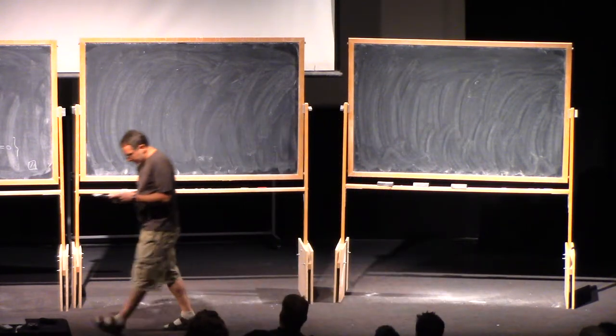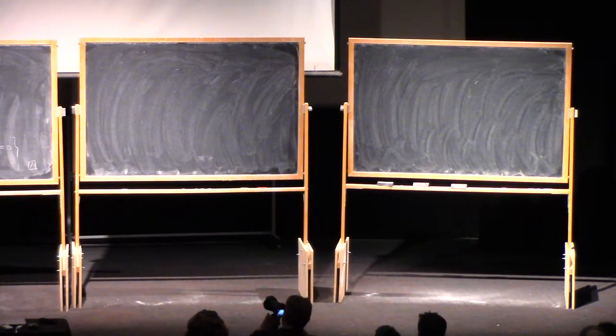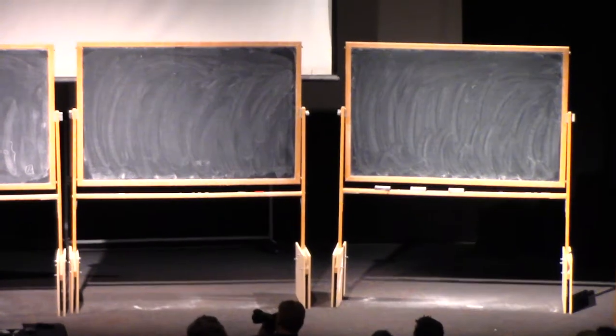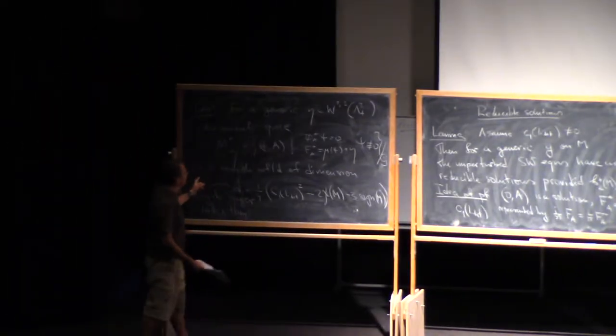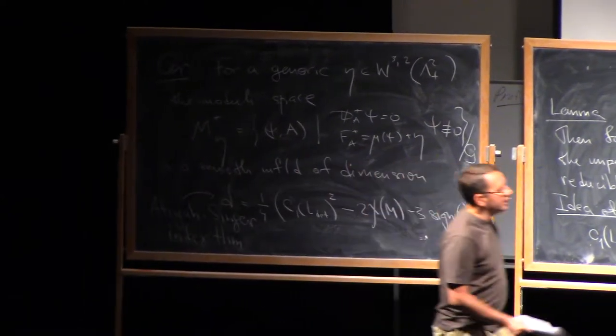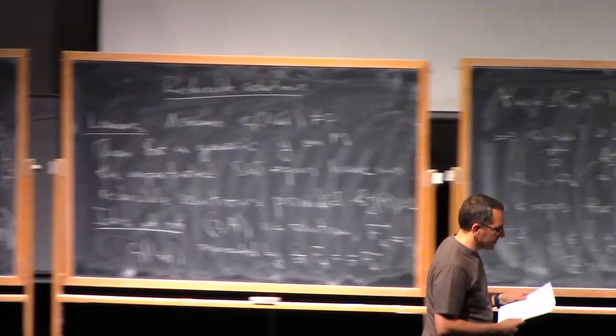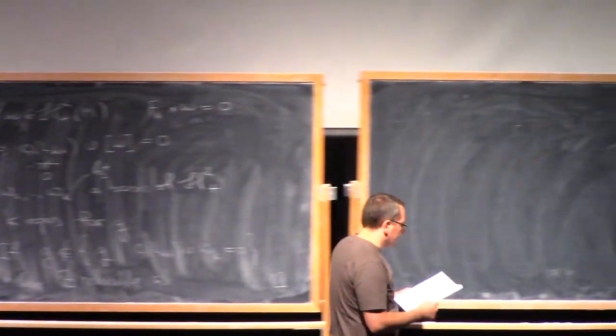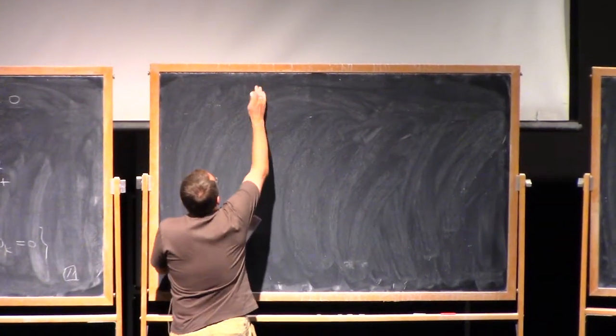What we have now is a smooth manifold which is compact and non-singular. The only remaining bit is an orientation. Let me discuss this now.